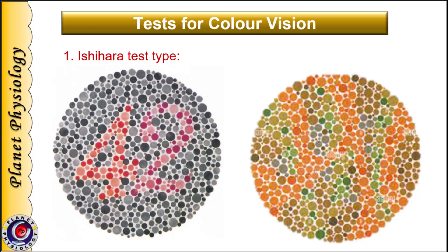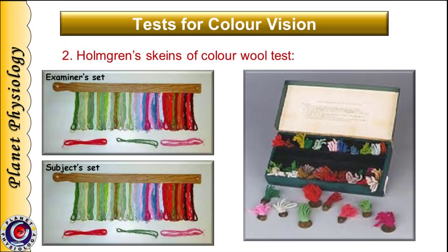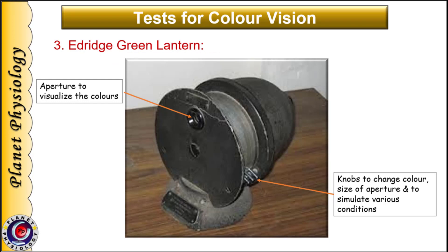The second test, which is also a very simple test, is Holmgren's wool test. Here the subject has to match the exact color of wool in their set with that of the examiner's. The last test is by using the Edridge Green Lantern — an electrically operated instrument which can simulate various weather and atmospheric conditions. The subject has to identify different colors displayed through a particular aperture under various situations. This is considered the most accurate test for testing color vision.